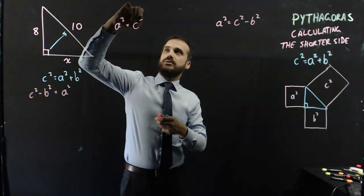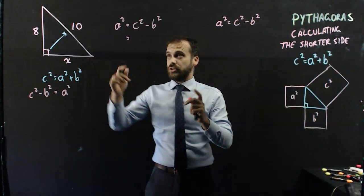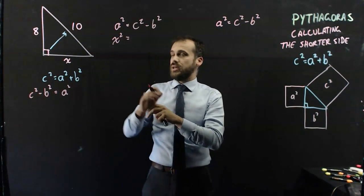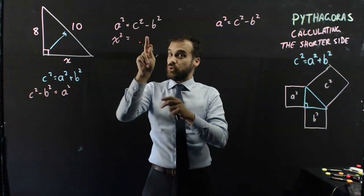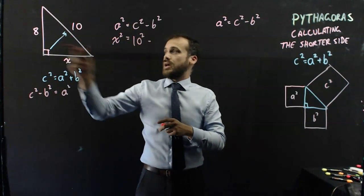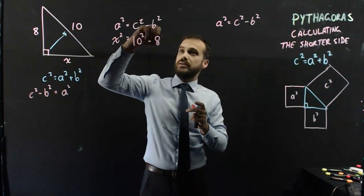So, we know that a squared is equal to c squared minus b squared. This is the shorter side that we're trying to find. So, we'll say that that's a. So, now we have x squared there. Our longer side is always the c value. So, that's that one there, 10 squared. And one of our shorter sides that we know can be that one there, 8 squared.